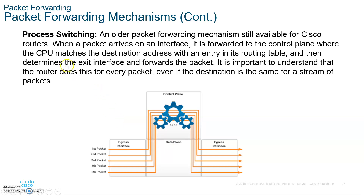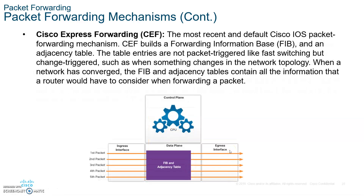With fast switching, the router caches previous lookup results — if it already forwarded to a particular network before, it sends it immediately without re-looking up the interface. CEF goes further with its FIB and adjacency tables, so in case a network fails, it can reroute immediately. This makes CEF the quickest of the three mechanisms.